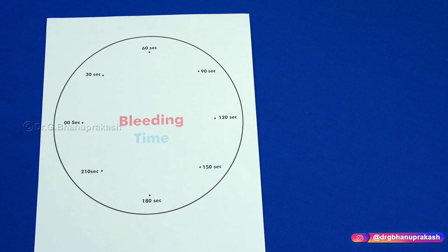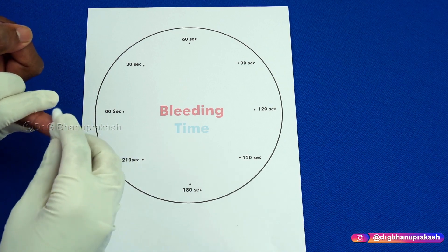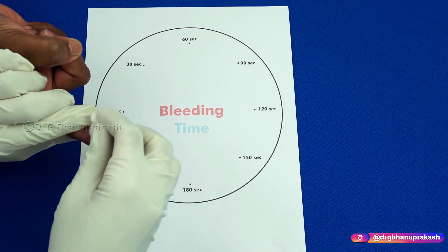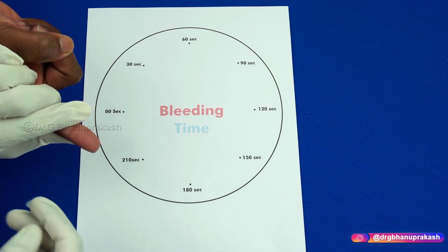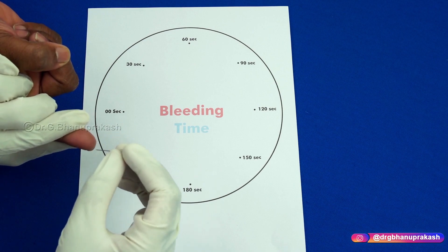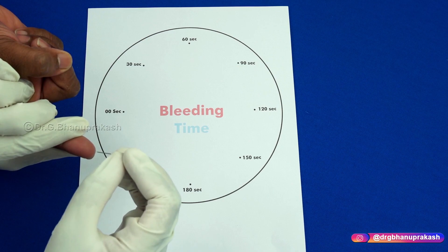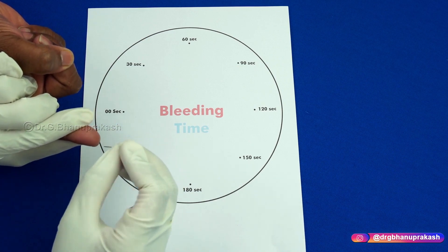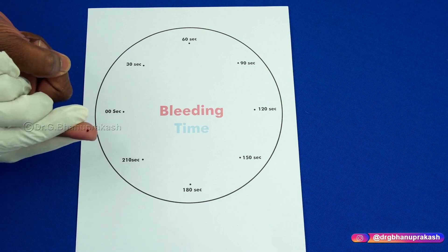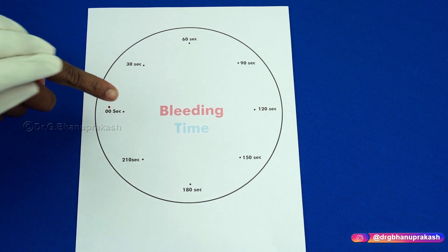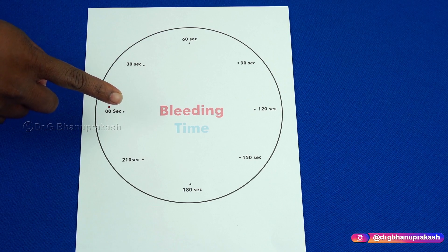Now let us start the procedure. After explaining the procedure to the patient, take the patient's finger and completely clean this area from center to periphery — sterilize for about 30 seconds. Now take the short needle and prick the patient's finger. The moment you see blood coming out of the finger, start the timer. The patient places his first drop of blood at zero seconds.